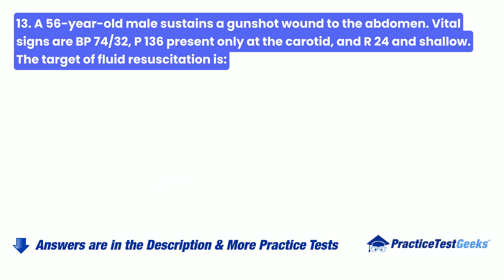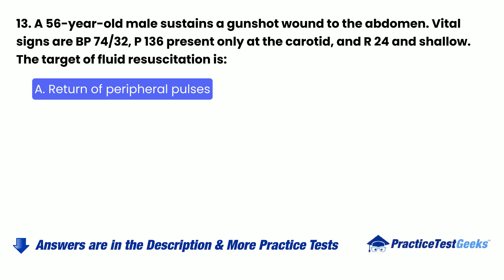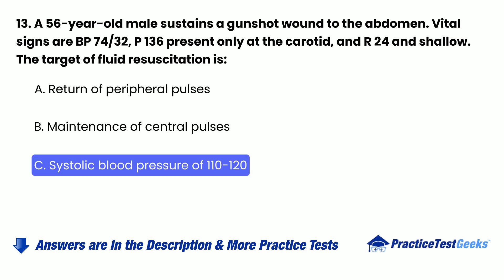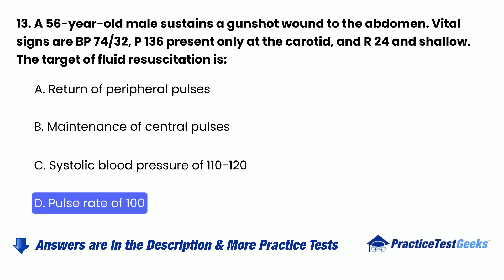Question 13: A 56-year-old male sustains a gunshot wound to the abdomen. Vital signs are BP 74/32, pulse 136 present only at the carotid, and respirations 24 and shallow. The target of fluid resuscitation is: A. Return of peripheral pulses. B. Maintenance of central pulses. C. Systolic blood pressure of 110 to 120. D. Pulse rate of 100.